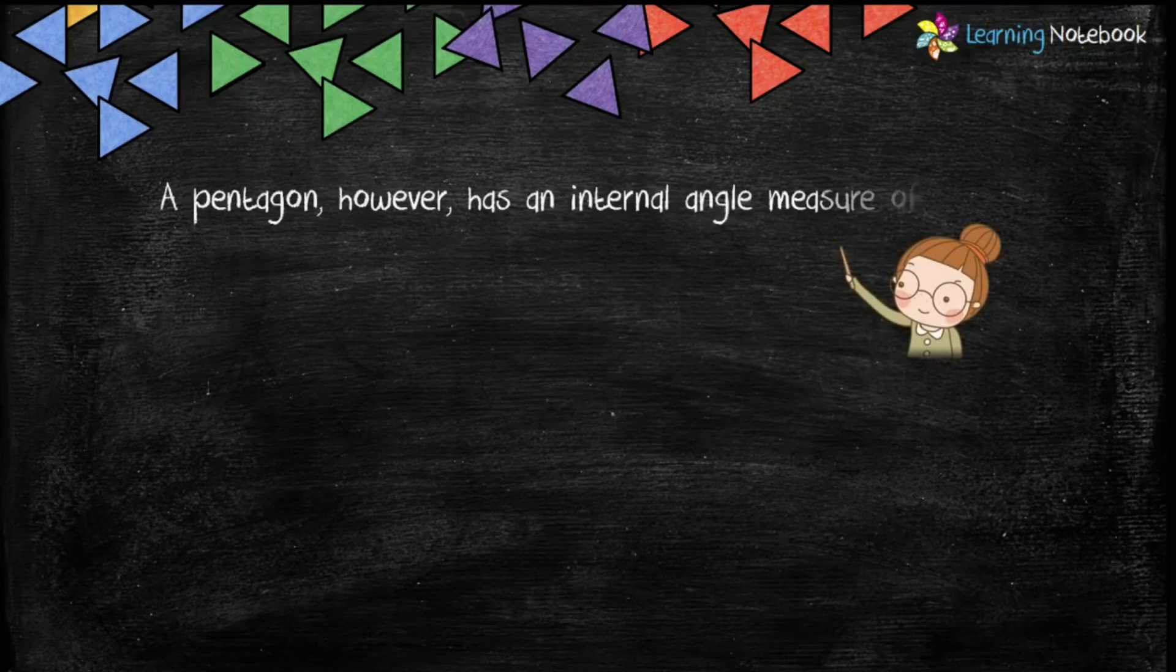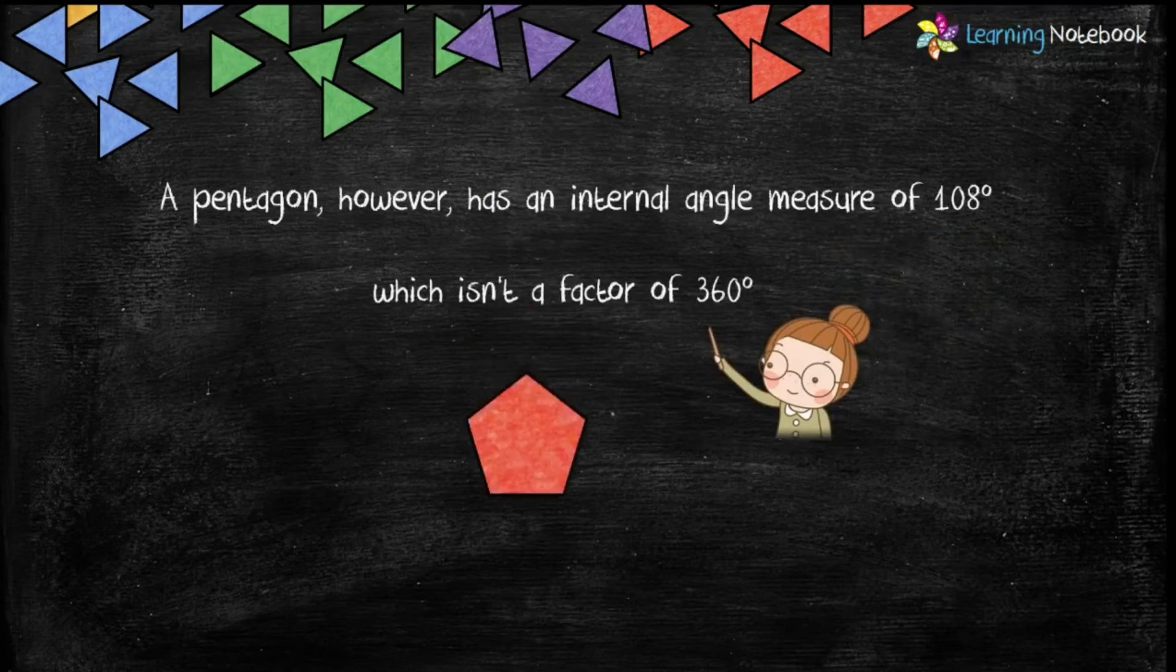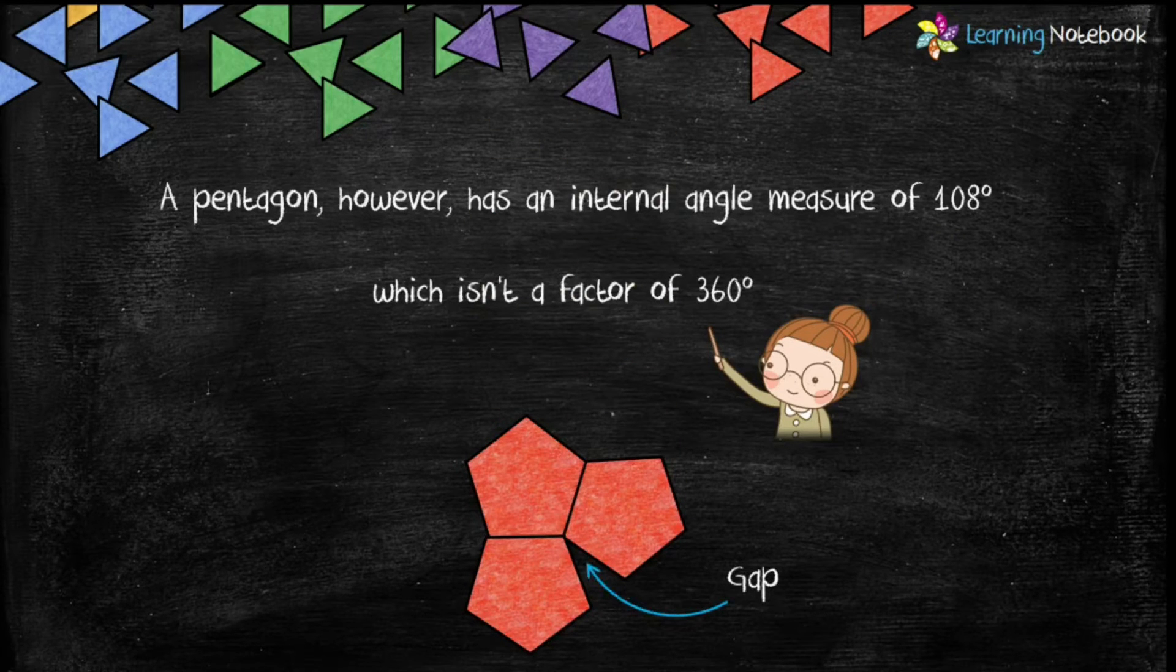But students, a pentagon has an internal angle measure of 108 degrees which is not a factor of 360 degrees. Therefore, a pentagon would not tessellate as it leaves a gap as shown here.